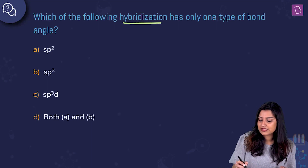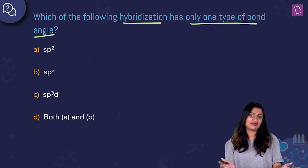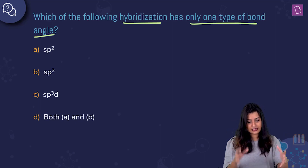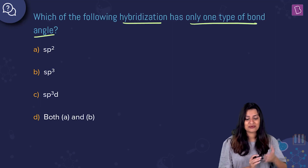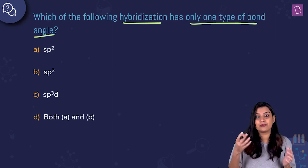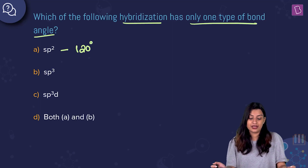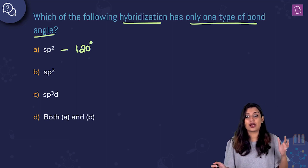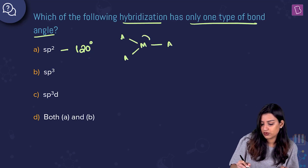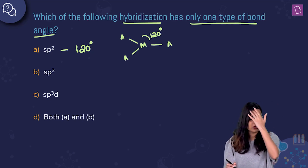The next question asks which hybridization has only one type of bond angle — or equivalently, which hybridization can produce two different bond angles. For sp² hybridization, the geometry is trigonal planar, giving a bond angle of 120° throughout. An MA₃-type molecule will have all bond angles equal to 120°, so there is only one type of bond angle here.